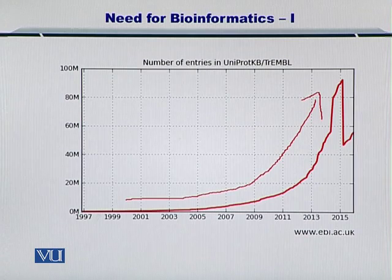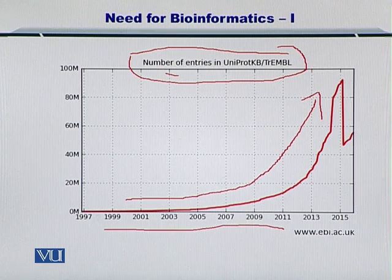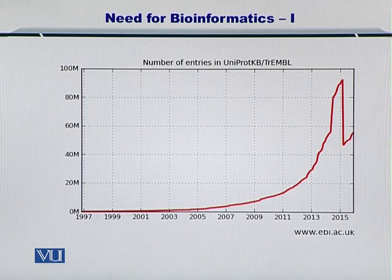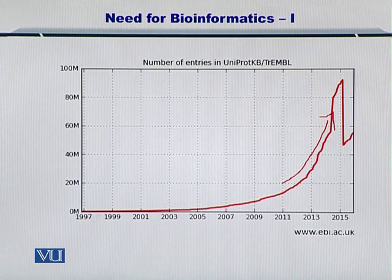Specifically, this graph is showing you the growth of the entries in the UniProt database, which is simply a protein sequence database, or you can call it the number of proteins that are known — the sequences versus the years on the horizontal axis. As you can see, there is an exponential rise in this data, and this sequence information can be used as input for bioinformatics tools towards understanding biology in a better way.